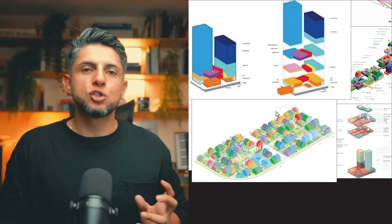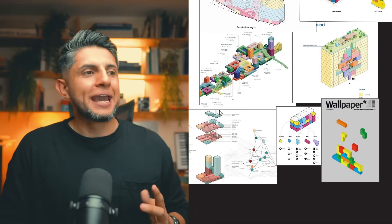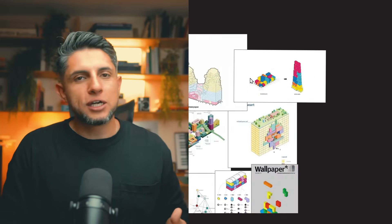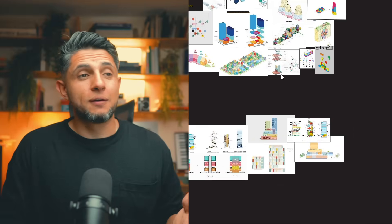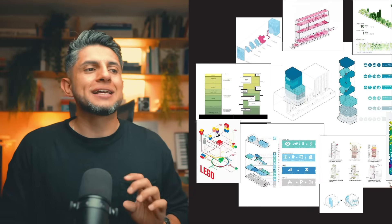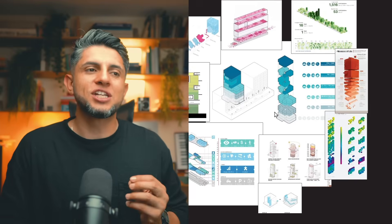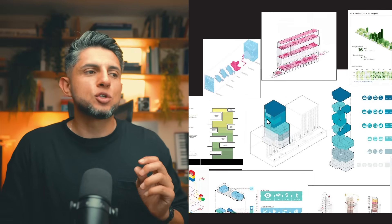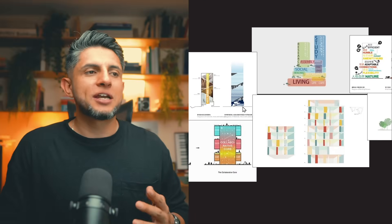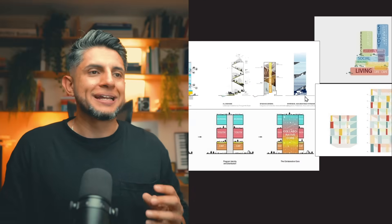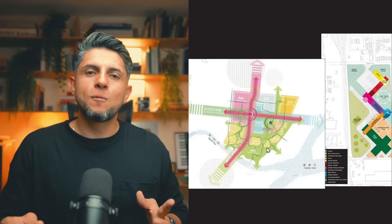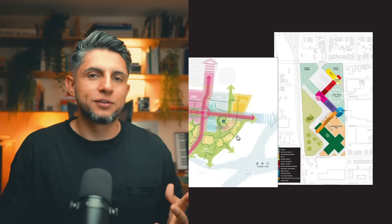Searching for different program diagram ideas, I found two that I really liked. The first is the classic multicolored diagram where you assign a color to each use. The second is a diagram of one single tone but with a change in light intensity to also show the program of the building. Many of these program diagrams can be shown from a floor plan, a section view, or an isometric view.